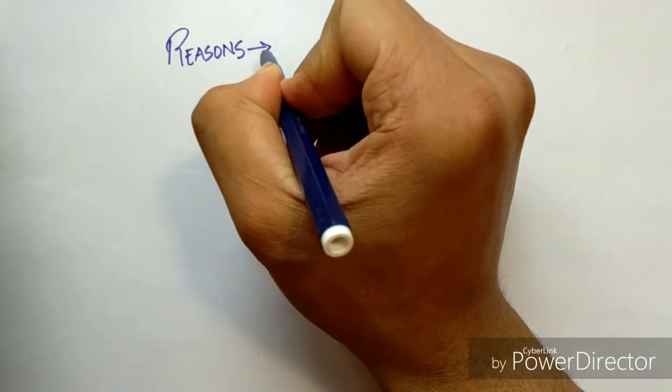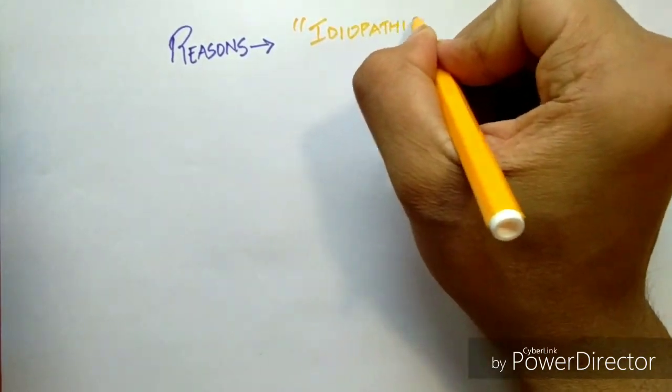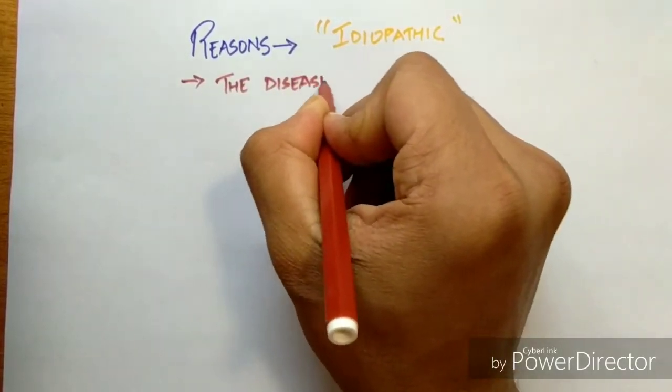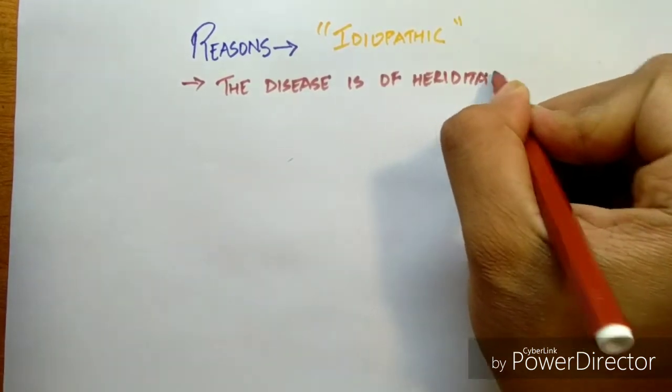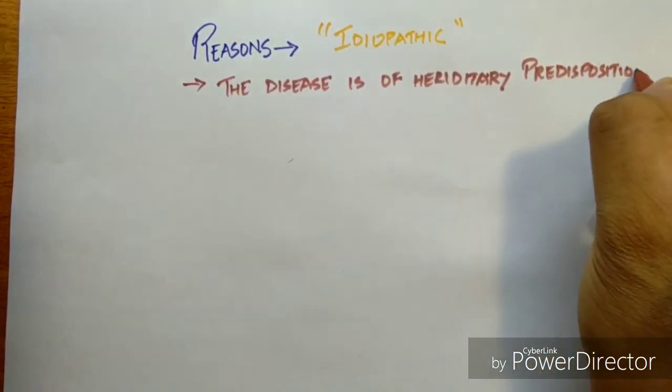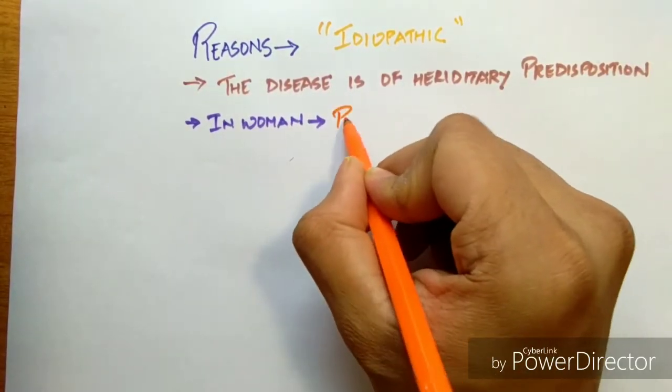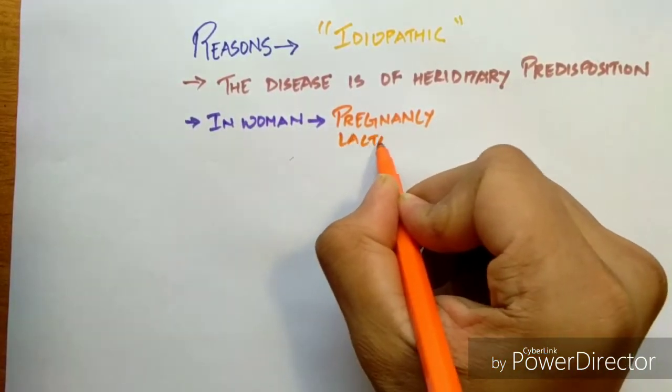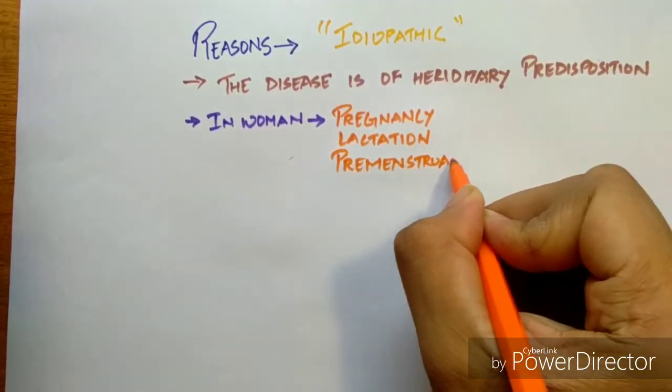The reasons are actually idiopathic, which are not clearly known, but the disease is of hereditary predisposition. It is seen mostly in women. It is observed that in the stages of pregnancy like lactation or the premenstrual period, it often affects.